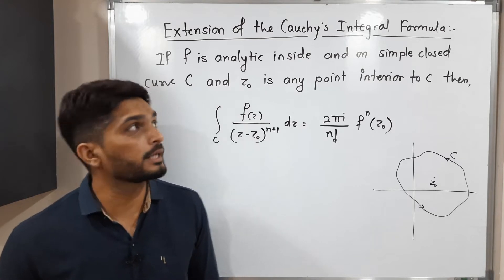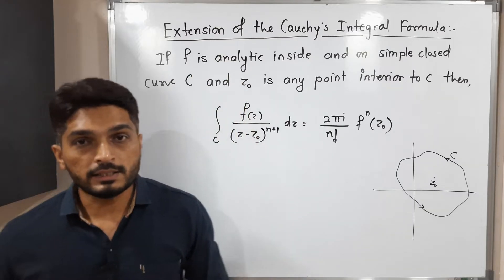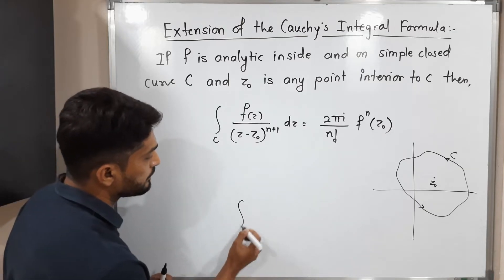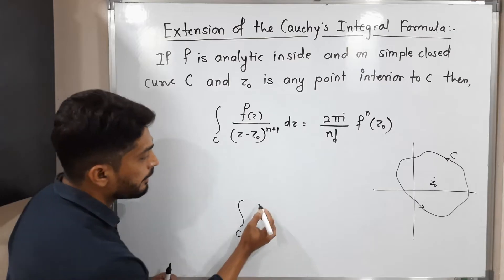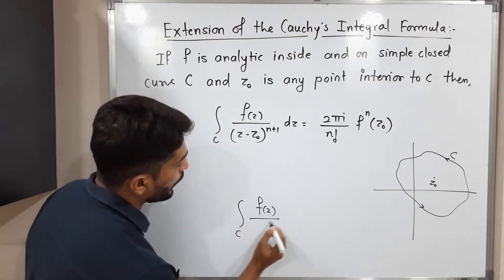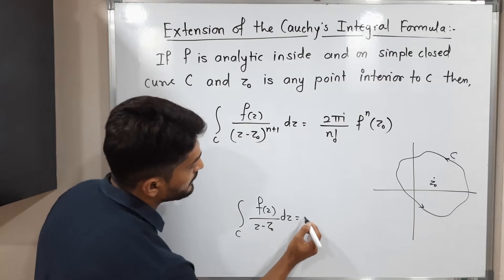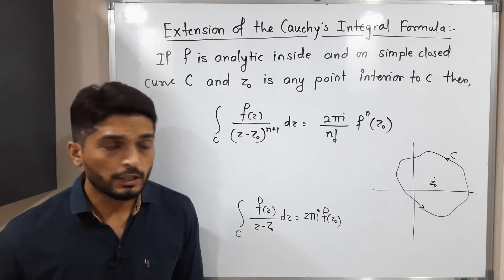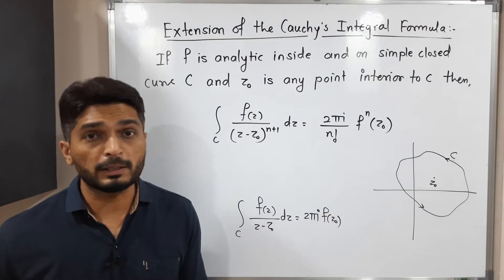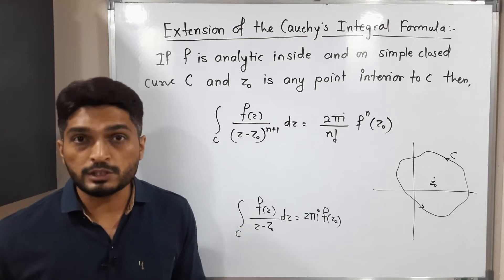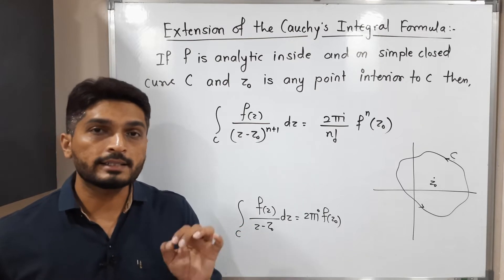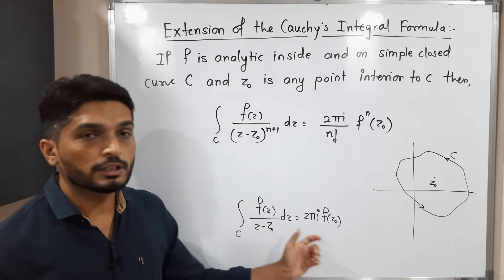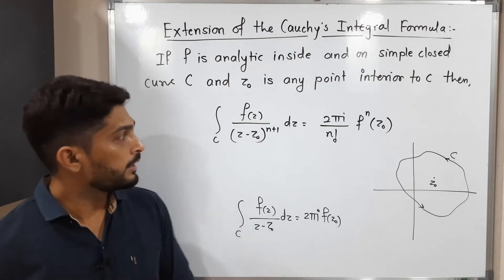You can easily understand why we are calling it the extension of Cauchy's integral formula. Let us recall the original definition: the integration over C of f(z) upon (z − z₀) dz is equal to 2πi · f(z₀). The same conditions apply: a simple closed curve C, a function f analytic inside and on C, and z₀ a point in the interior of C.